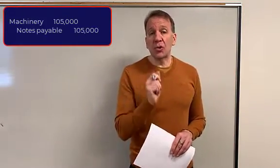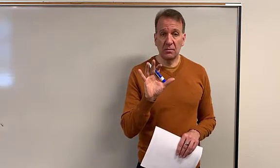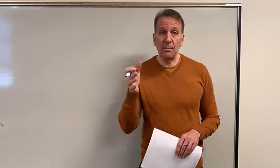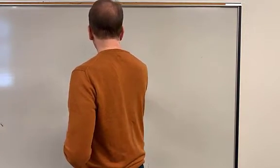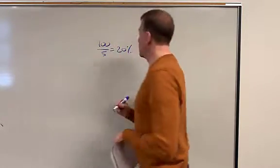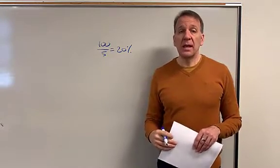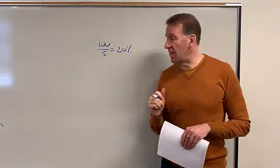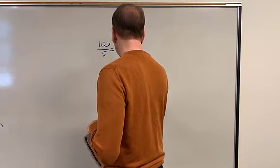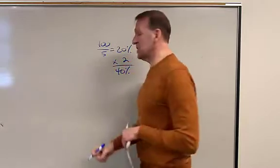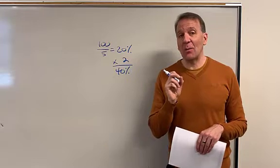Now for straight line method, we depreciated it over five years. So that's basically 20% per year. If you took 100% divided by 5, that would get you 20% for the straight line method per year. In this video, we're going to go over the double declining method. So what we're going to do is we're going to double that to 40%. So our rate's going to be 40%.